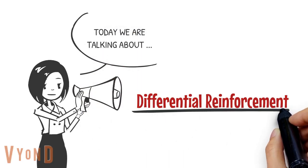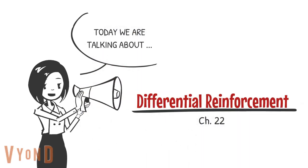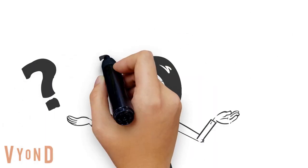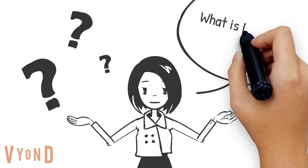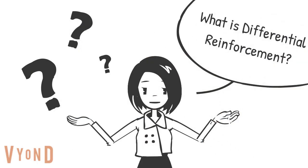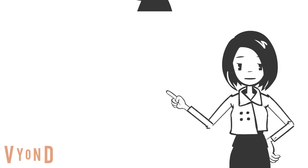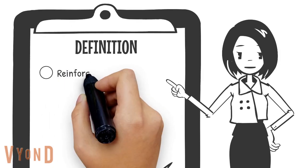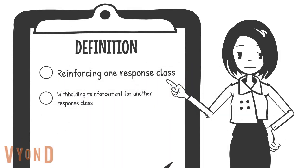Today we are talking about Differential Reinforcement, Chapter 22 in your Cooper book. The definition of differential reinforcement is: when implementing differential reinforcement, we're reinforcing one response class — which is usually the behavior we want to increase — while withholding reinforcement for another response class, which is the behavior we want to reduce.